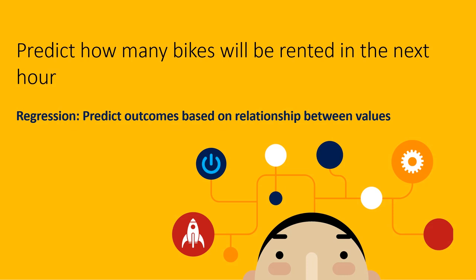For this specific use case that Sarah is trying to solve, I think we need to predict how many bikes will be rented in the next hour. I really think that regression is the right method we should use, because we want to predict an outcome based on the relationship between values.